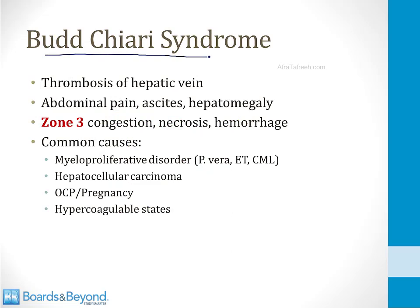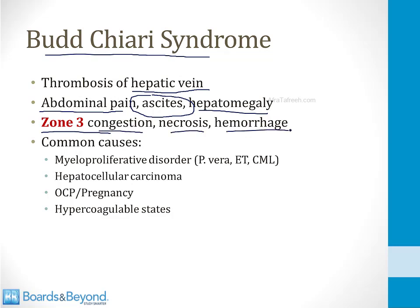Our next liver disorder is Budd-Chiari syndrome. This occurs when there is thrombosis of the hepatic vein. When there's thrombosis of the hepatic vein, blood cannot drain from the liver and therefore the liver swells. Symptoms include abdominal pain from the swollen liver, hepatomegaly, and ascites — because when blood can't drain from the liver, it backs up into the portal vein, pressure in the portal system gets high, and that pushes fluid out into the abdomen. On a biopsy specimen, you'll see problems in zone 3 — zone 3 is where blood is drained from each liver lobule and it cannot drain because of the blood clot, resulting in congestion, necrosis, and hemorrhage.